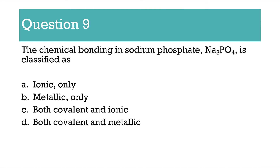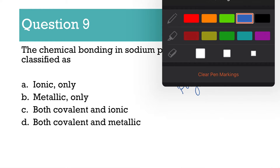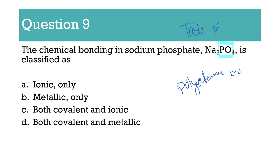Number 9: the chemical bonding in sodium phosphate is classified as... When you have a complicated-looking formula, your first thing should be to check table E — that has your polyatomic ions. PO4 comes directly from table E and is held together by covalent bonds, but it has a charge — PO4 has a negative 2 charge. What holds the positive sodium and the negative polyatomic ion together is your ionic bond. So what holds PO4 together is covalent, but what holds sodium to PO4 is ionic. Double check table E.